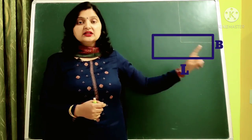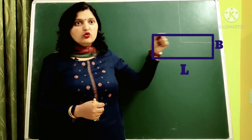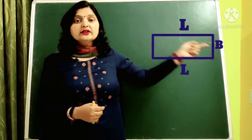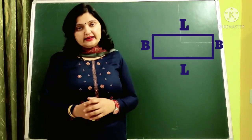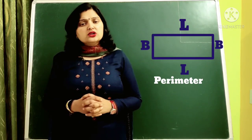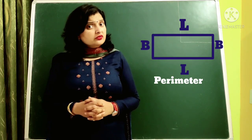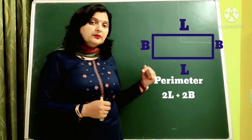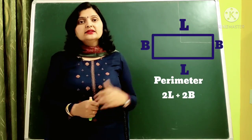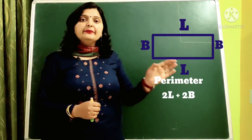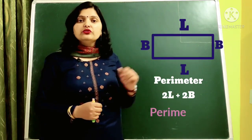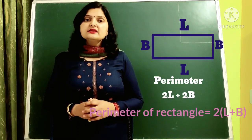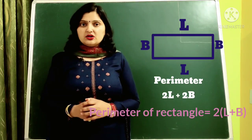The opposite sides of a rectangle are equal. If one side is L, then the opposite side is also L. If one side is B, then the opposite side is also B. To calculate the perimeter, we add all four sides: L plus L plus B plus B, which gives us 2L plus 2B. From this we derive the formula to calculate the perimeter of a rectangle, which is 2 times (length plus breadth).